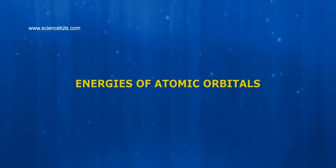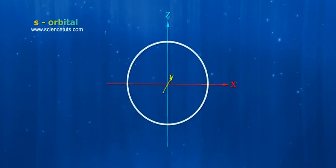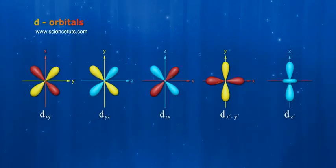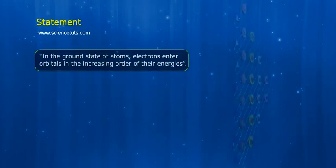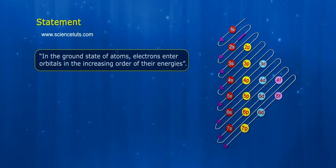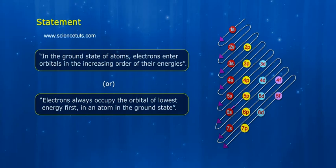Energy of atomic orbitals: 1. S-orbital, 2. P-orbitals, 3. D-orbitals. Statement: In the ground state of atoms, electrons enter orbitals in the increasing order of their energies, or electrons always occupy the orbital of lowest energy first in an atom in their ground state.